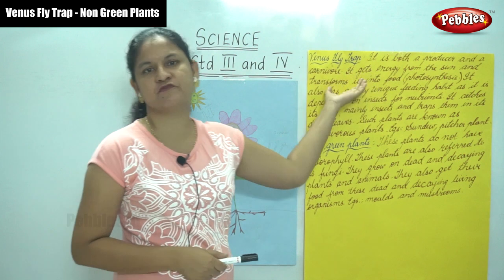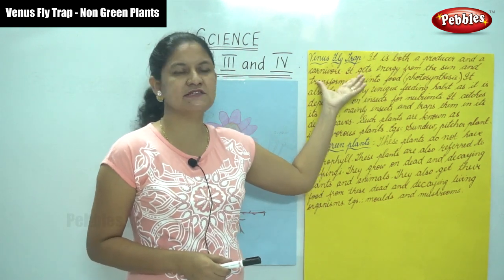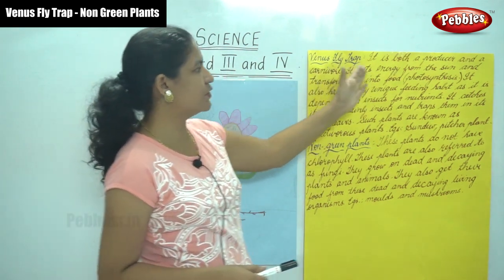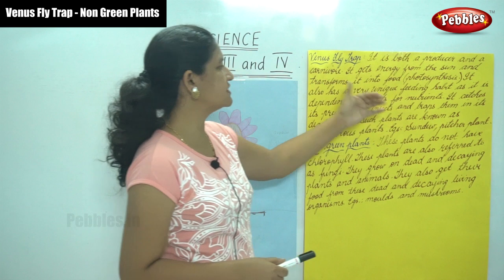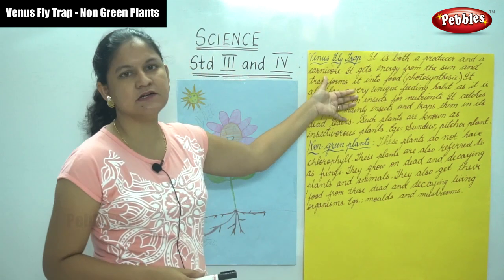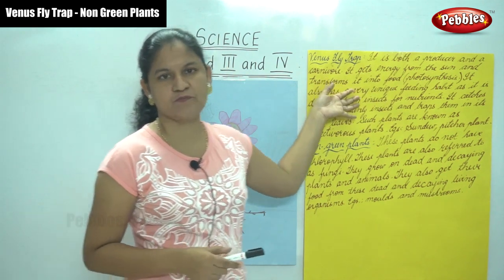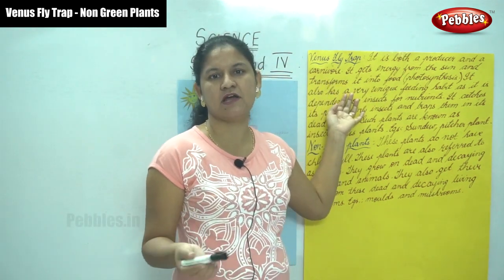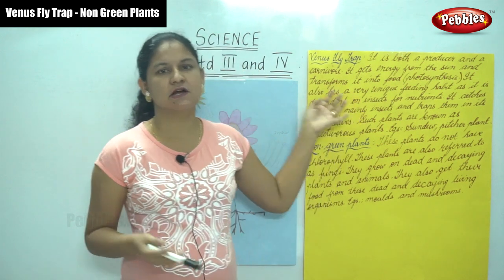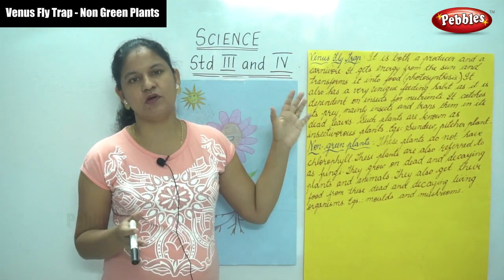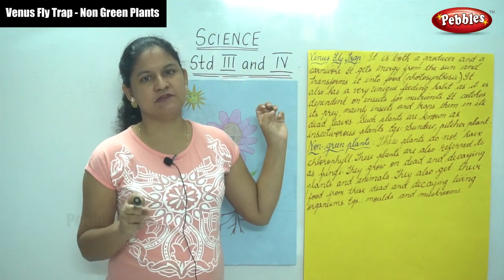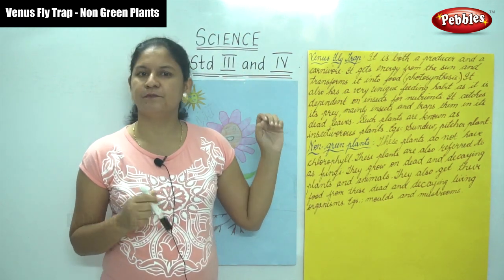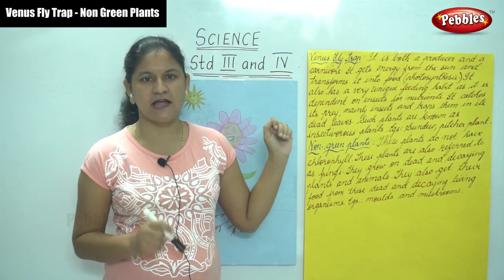The name of this plant is called the Venus flytrap. It is both a producer and a carnivore. A carnivore is an animal that eats only other animals, and we will be talking more about carnivores in our next class.